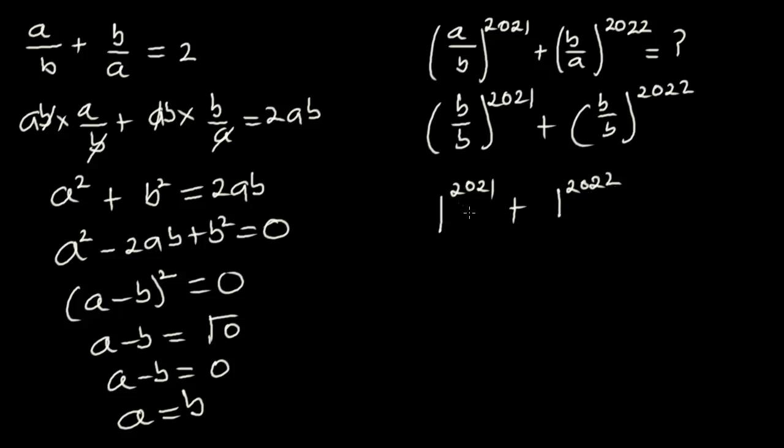Now b over b gives 1 exponent 2021 plus 1 exponent 2022. From here, 1 raised to the power of 2021 is the same as 1, plus 1 raised to the power of 2022 is also the same as 1, so 1 plus 1 is equal to 2. So this whole expression is equal to 2.